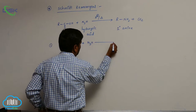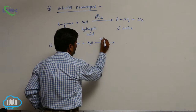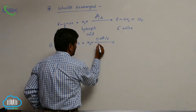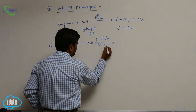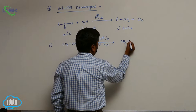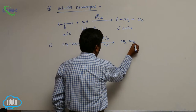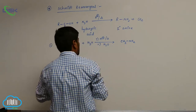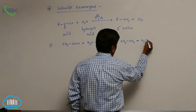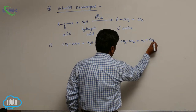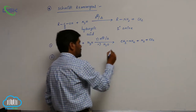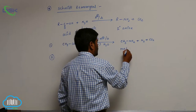The first example is acetic acid. When acetic acid reacts with hydrazoic acid in the presence of an acid medium, this is the first step. The second step is hydrolysis to form methylamine, with loss of N₂ molecule and carbon dioxide.